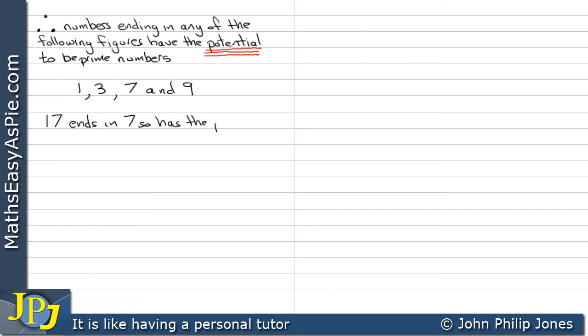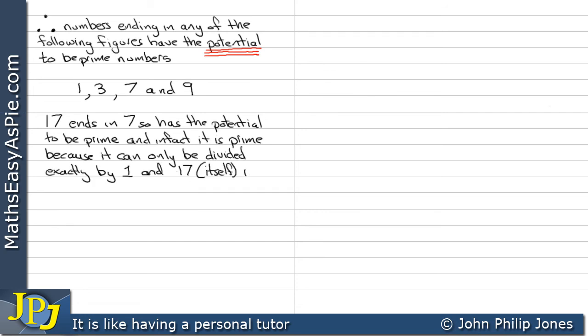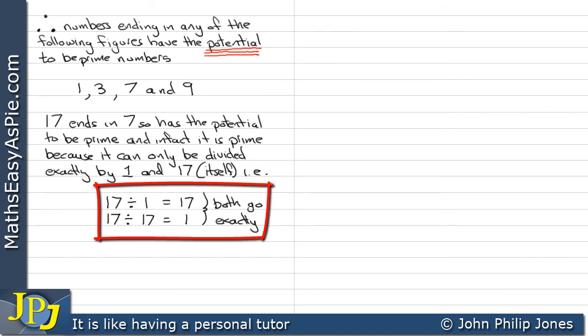17 ends in 7, so has the potential to be prime. And in fact it is prime because it can only be divided exactly by 1 and 17 itself. As you can see, the divisions here both go exactly. Consequently, 17 can only be divided by 1 and itself. Therefore, 17 is a prime number.